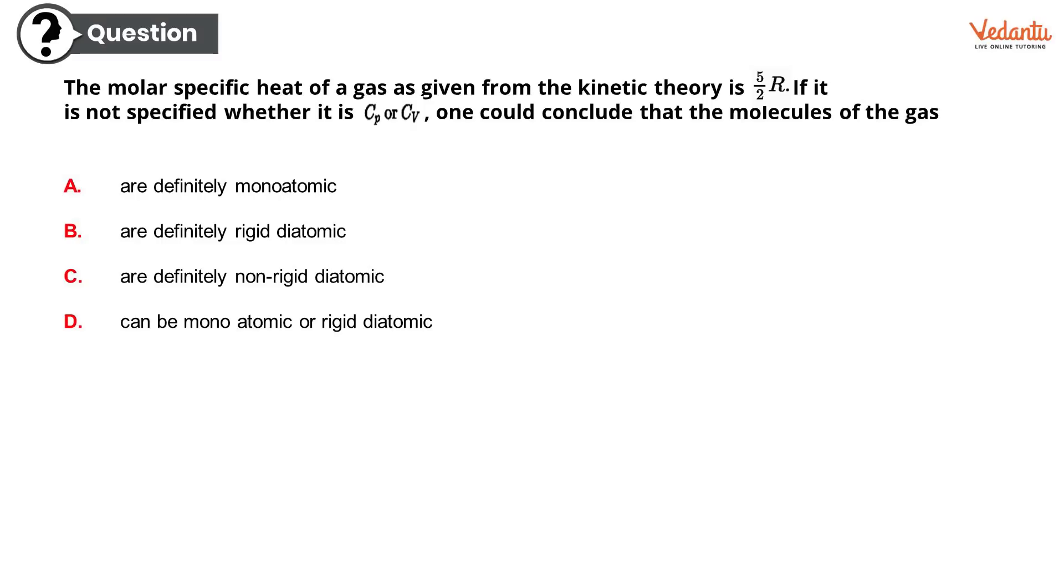Now a question which combines physics and chemistry. The molar specific heat of a gas as given from the kinetic theory is φ/2 R. If it is not specified whether it is Cp or Cv, one could conclude that the molecules of the gas: are definitely monoatomic, are definitely rigid diatomic, are definitely non-rigid diatomic, or option D can be monoatomic or rigid diatomic. What do you think? The correct option is option D, can be monoatomic or rigid diatomic. Congratulations! Very well done. Kudos to each and every one of you who are putting your maximum efforts to do each and every question.